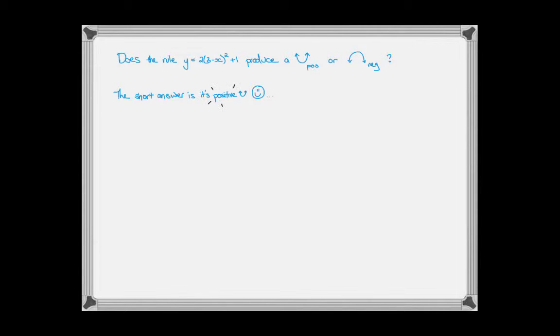Well, the short answer is that it produces a positive parabola, although intuitively it looks like it's going to be negative because of the sign in front of the x in the brackets there. So the next logical question is, why? Why is this going to create a positive parabola?